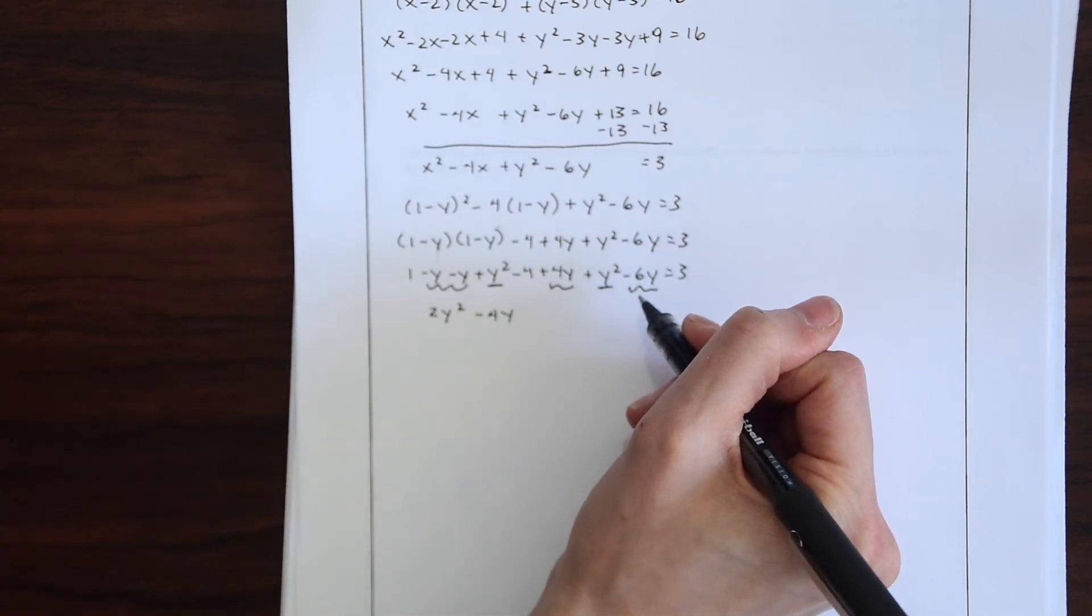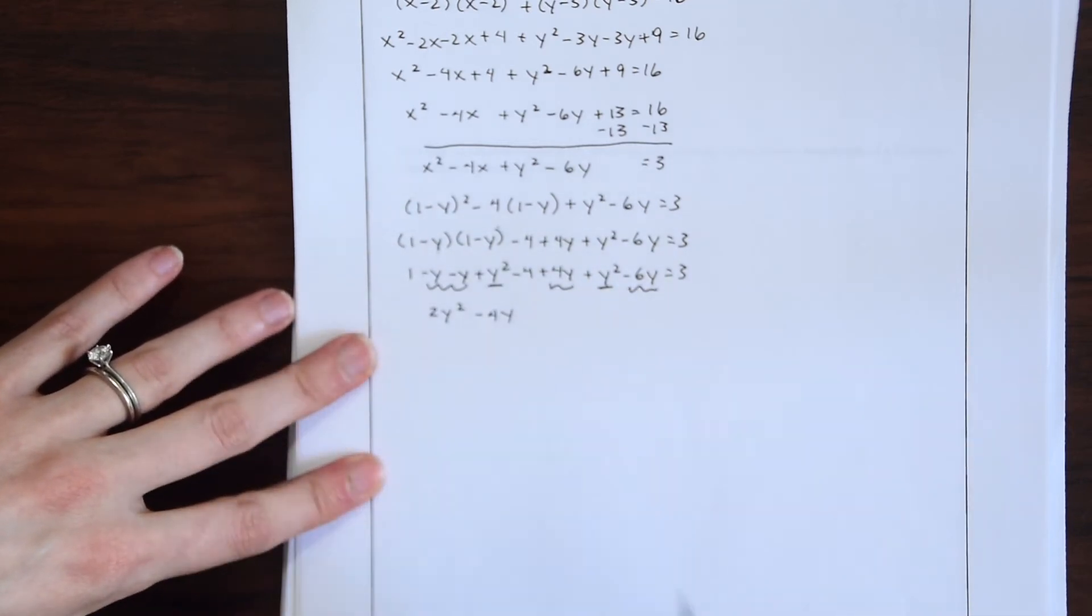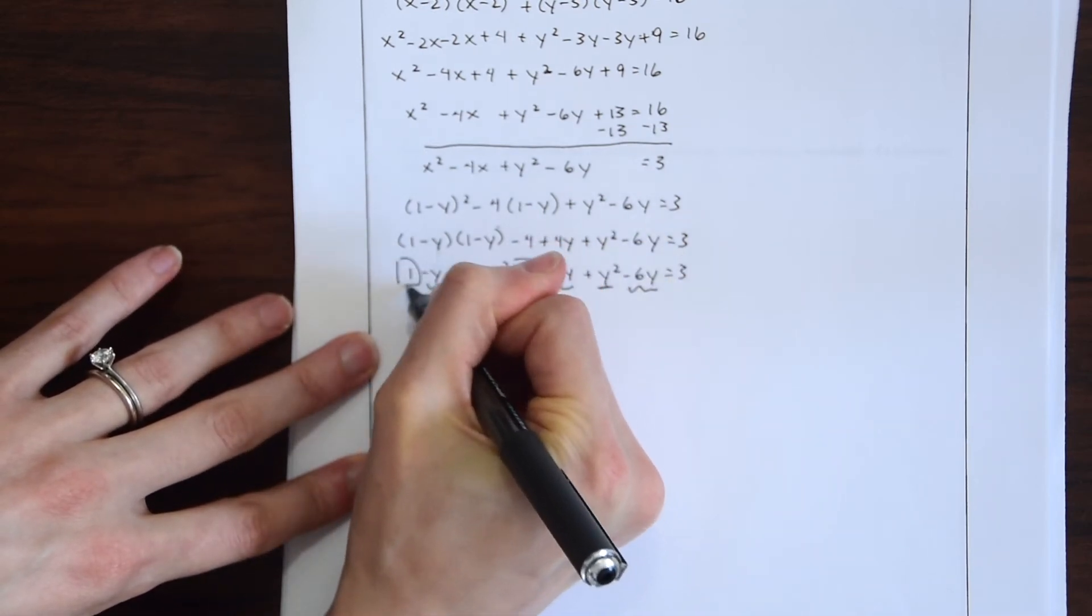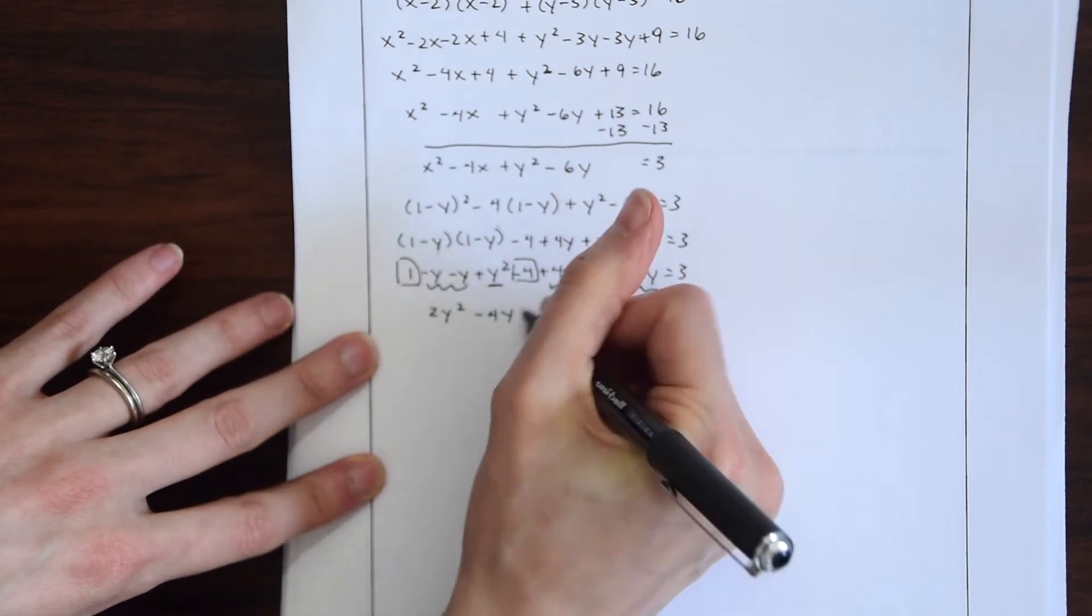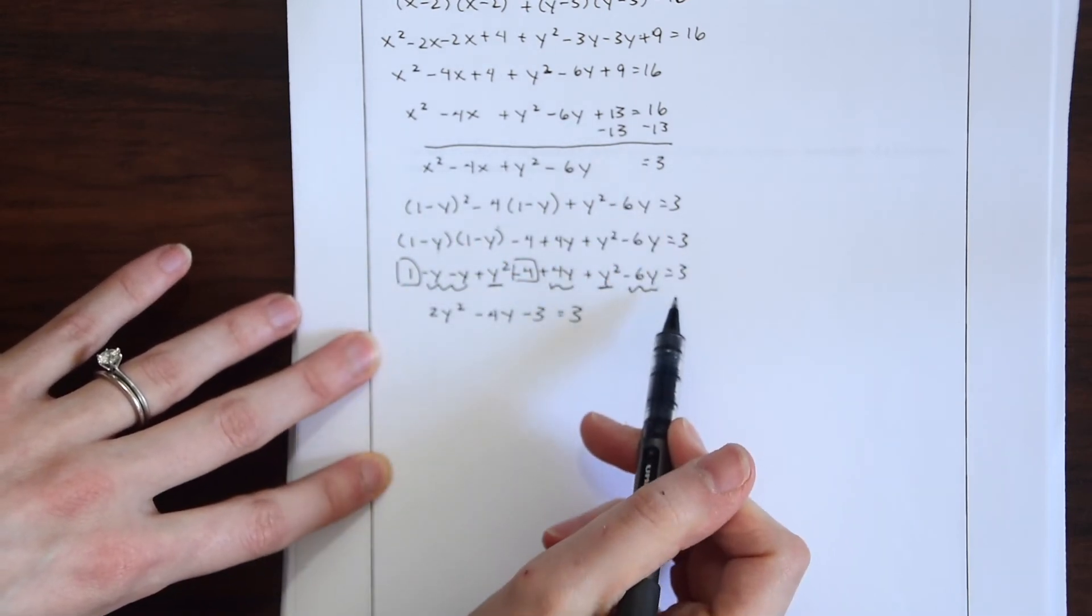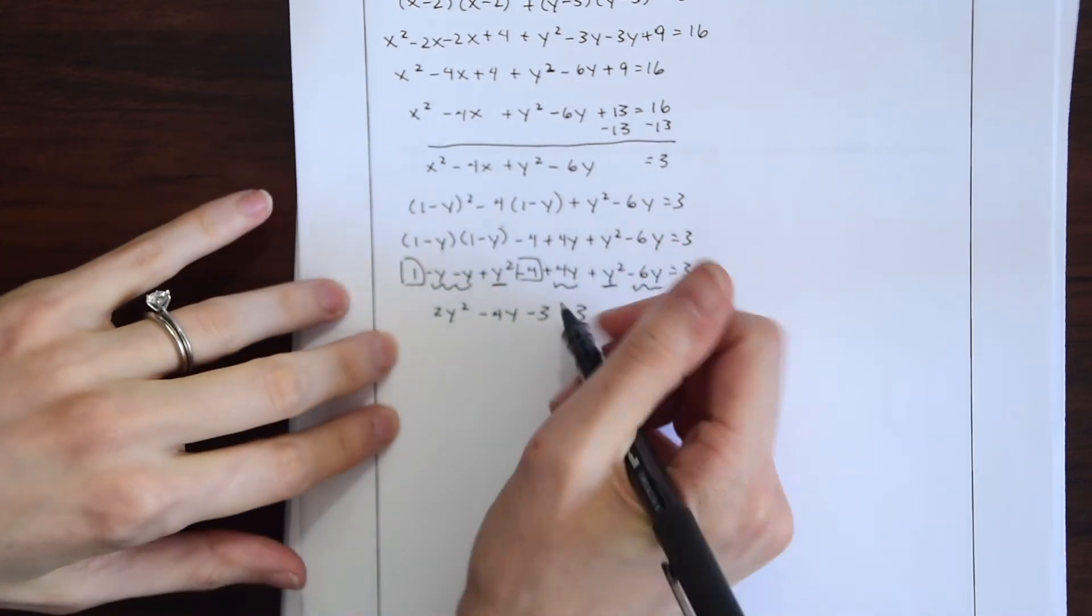So we have minus 2 and then we have plus 4 which gives us 2 and then minus 6. So negative 6 plus 2 will be minus 4y. And then we have our whole numbers which we have negative 4 and 1. So negative 4 plus 1 will just give us minus 3 and then equal to that 3. Okay. So we're getting closer.